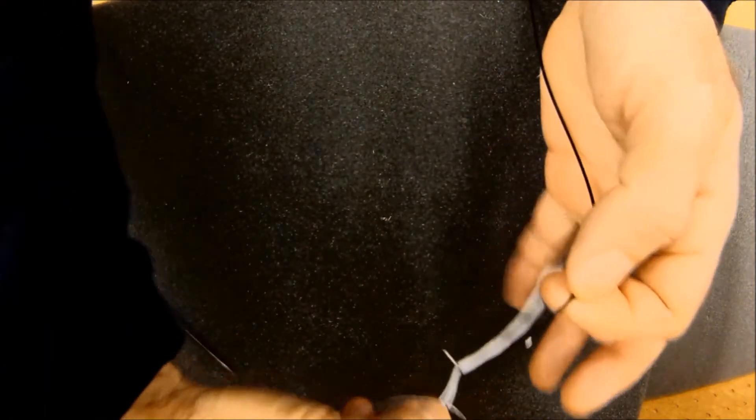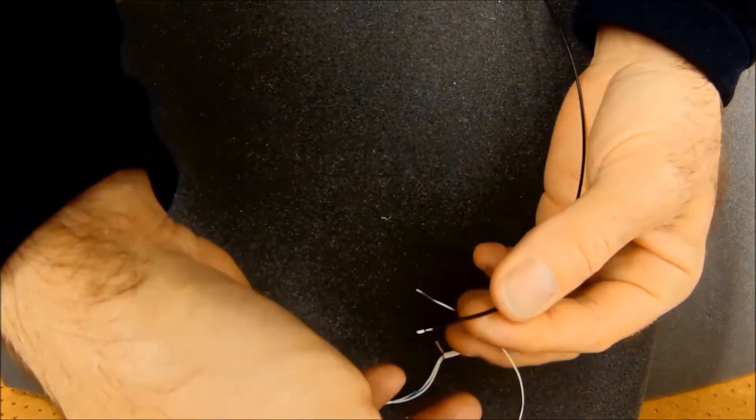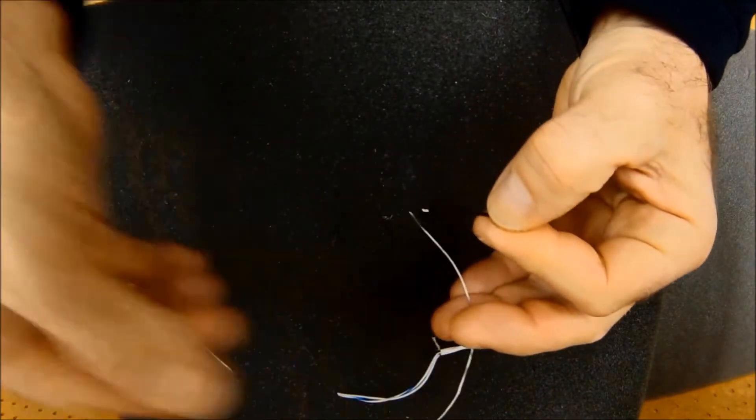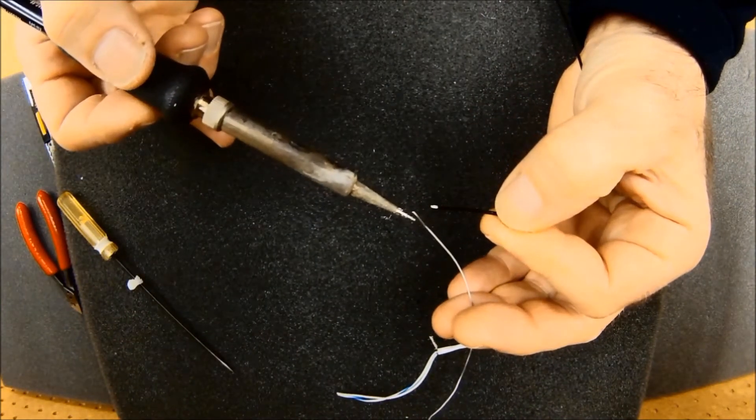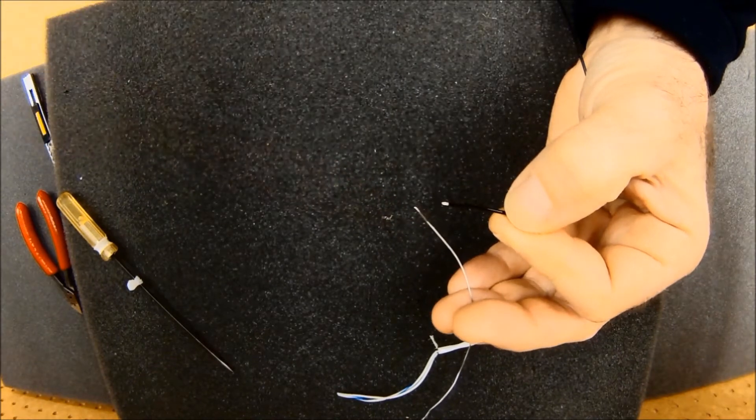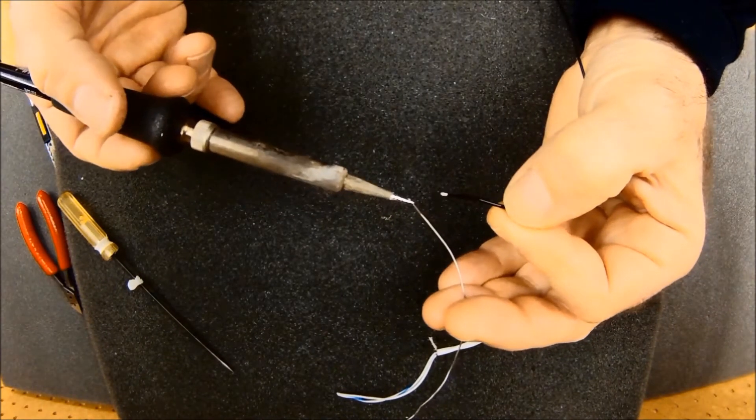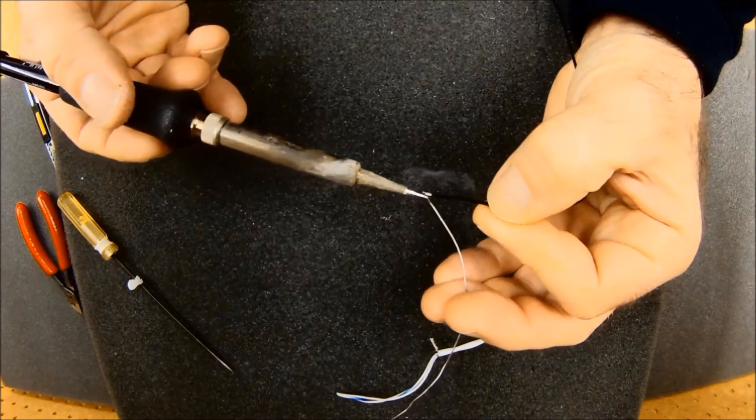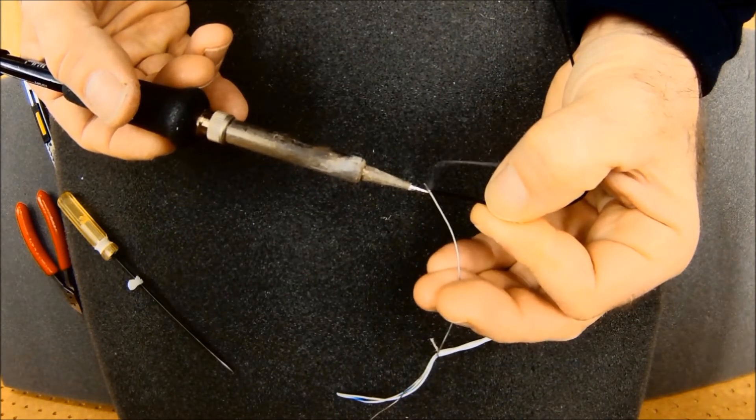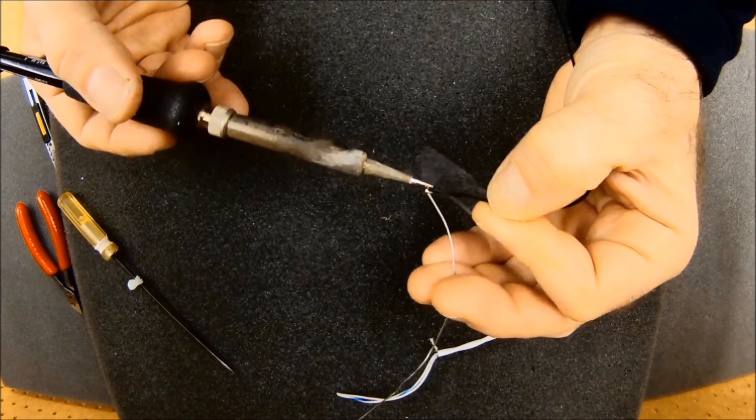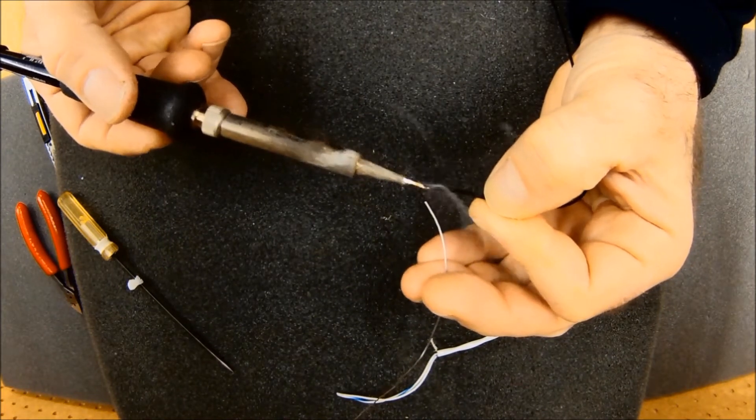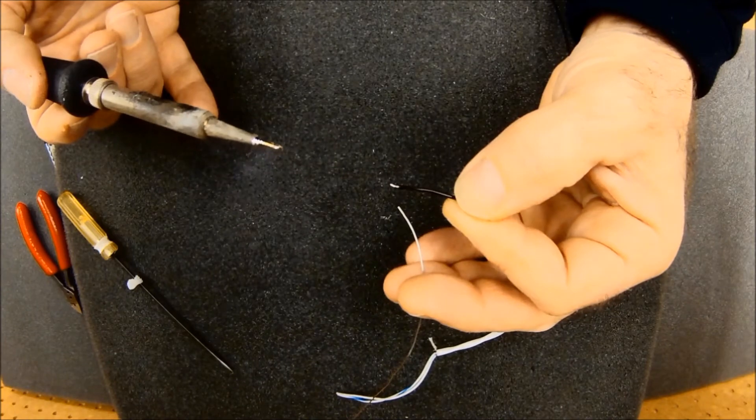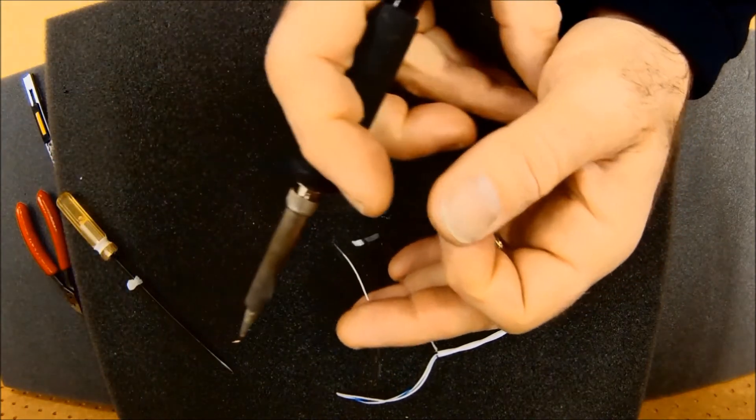This part is very important. I'm going to actually tin both of these wires. Take my pencil tip iron, make sure it's clean, melt a little bit of solder on it, heat up the conductor, and flow a little bit of solder into it, just to stick all the strands together. This is called tinning.